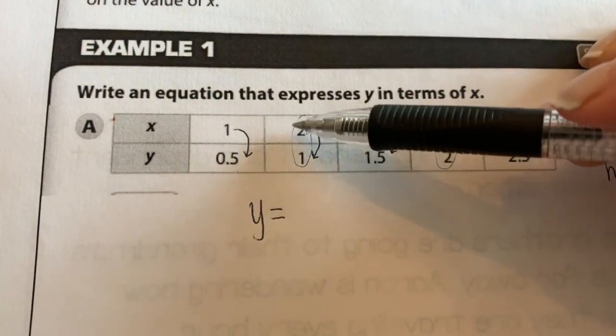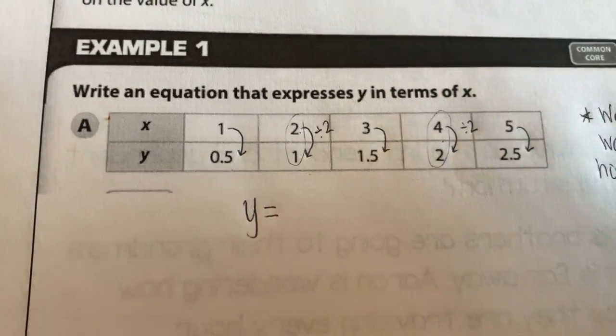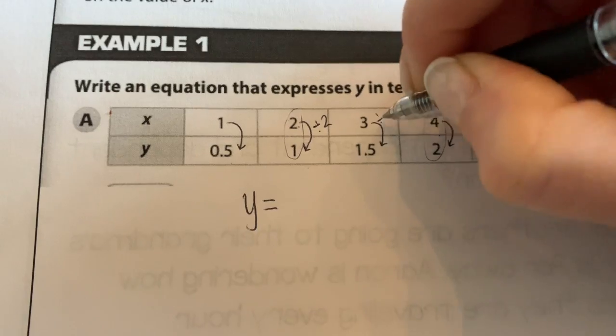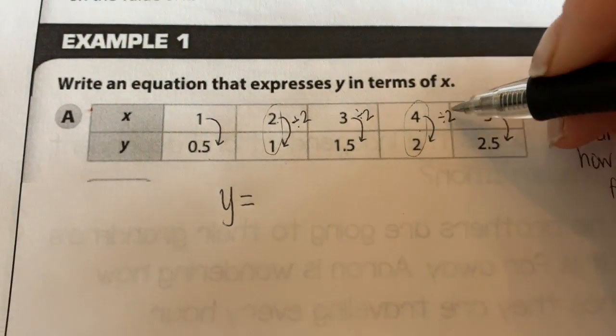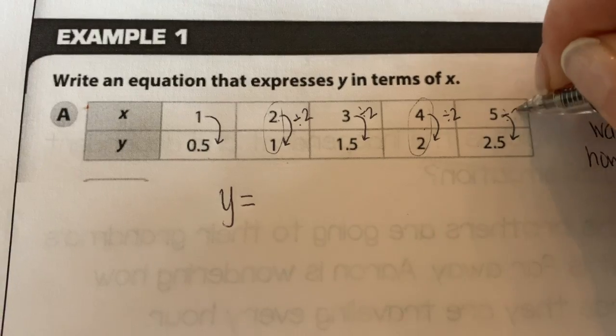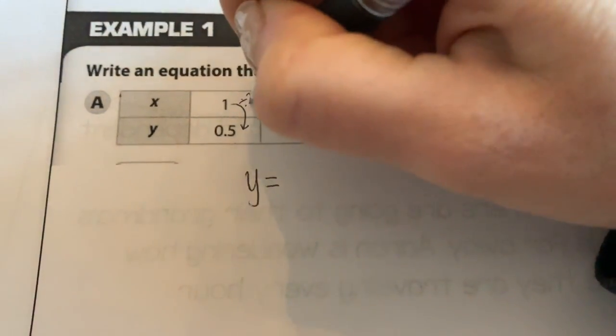Does that work for all of these? If I divide 1 by 2, do I get 0.5? I sure do. If I divide 2 by 2, I get 1. If I divide 3 by 2, I get 1.5. Dividing 4 by 2, I get 2. And dividing 5 by 2, I get 2.5. So that would be our rule here.